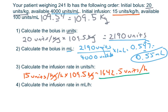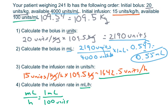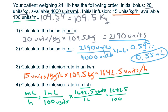Use what he needs per hour and the available concentration of 100 units per milliliter to calculate the infusion rate. Using dimensional analysis: 1 mL per 100 units, times 1,642.5 units per hour. Units cancel. 1,642.5 divided by 100 gives 16.425. Rounding to a whole number gives 16 milliliters per hour.